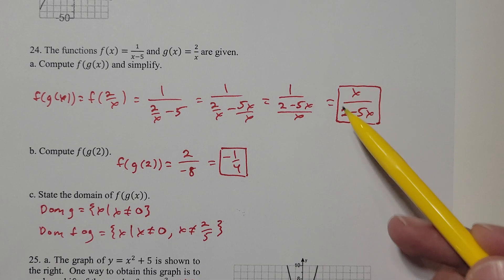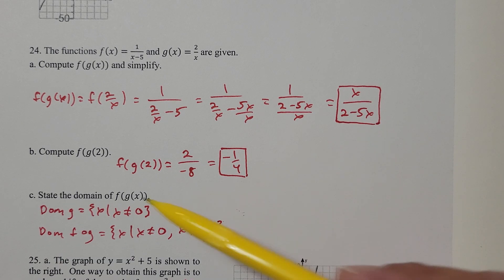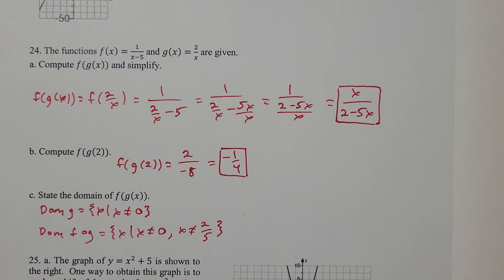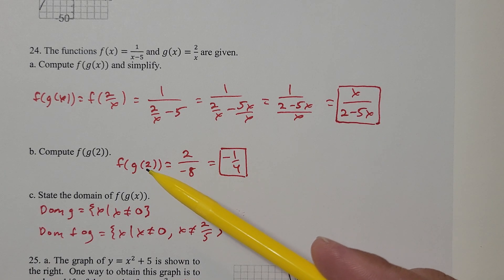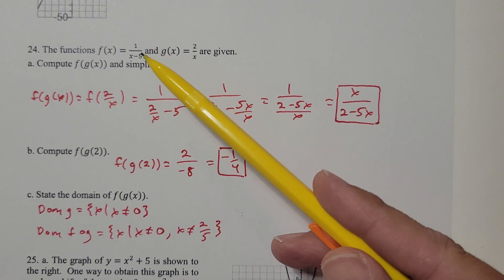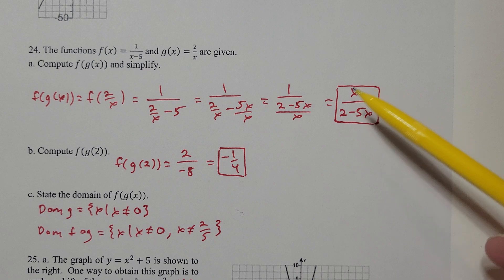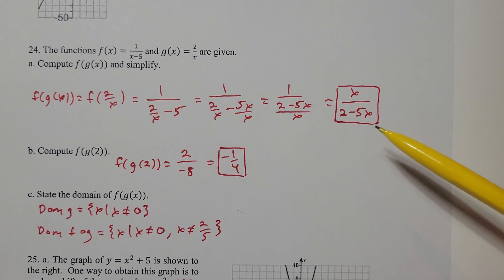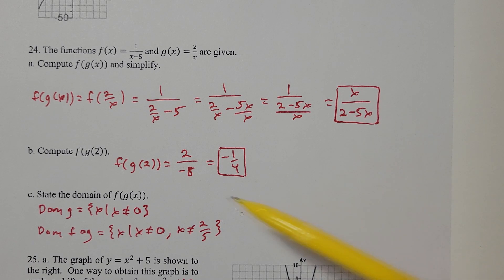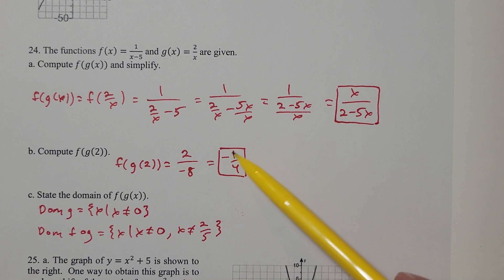So x/(2 − 5x) is the simplified answer. In part b, find f(g(2)). First, g(2) = 2/2 = 1. Plugging 1 into f: 1/(1 − 5) = −1/4. Alternatively, plug x = 2 into the simplified f∘g: 2/(2 − 5·2) = 2/(2 − 10) = 2/(−8) = −1/4. Both methods give −1/4.